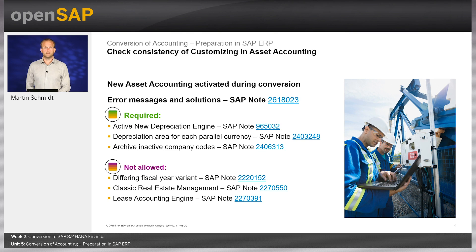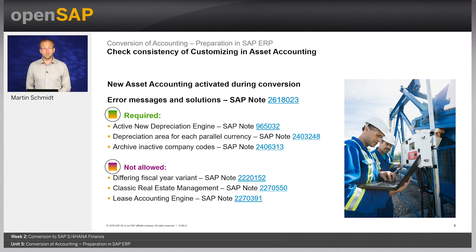First, you need to have the new depreciation calculation engine in place. Available since 2005, many customers still don't have it activated. It replaces the old logic based on asset movements with a new calculation logic based on period intervals. Activation does not require any migration — you just need to switch on generic business function EA-Fin. If you have custom enhancements of your depreciation calculation, you need to transfer them from the old user exit into newly provided business add-ins.